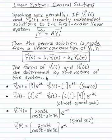They can be everything from simple: 2, 1, e to the 2t; 1 minus 1, e to the minus 2t; to ugly, in the case of a spiral sink where I have oscillation and decay.